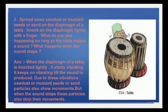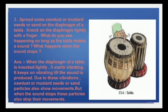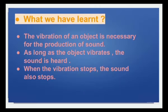Third experiment: spread some sawdust, mustard seeds, or sand on the diaphragm — that means the surface — of a tabla. Knock on the diaphragm lightly with a finger. What do you see? The tabla makes a sound. When the diaphragm of a tabla is knocked lightly, it starts vibrating and keeps on vibrating as long as the sound is produced. Due to these vibrations, the sawdust, mustard seeds, or sand particles also show movement. But when the sound stops, these particles also stop moving — that movement is nothing but vibration. What we have learned: the vibration of an object is necessary for the production of sound. As long as the object vibrates, the sound is heard. When the vibration stops, the sound also stops.